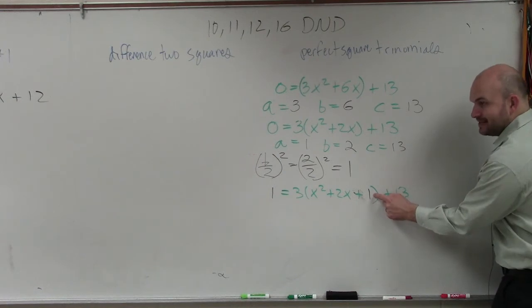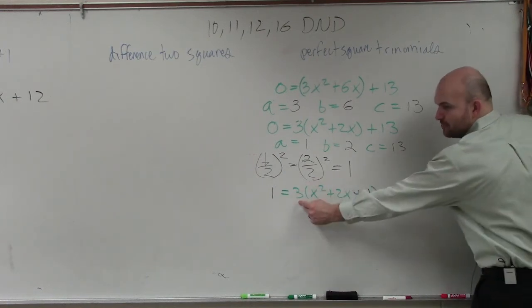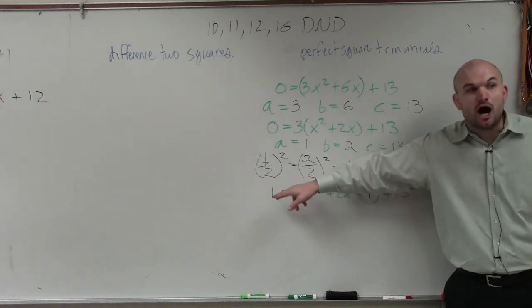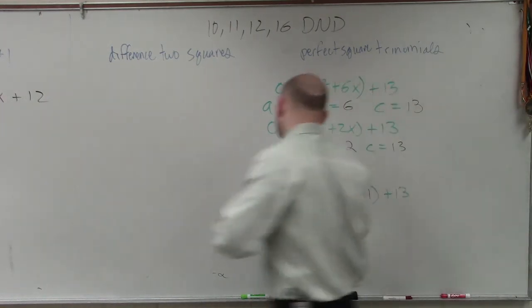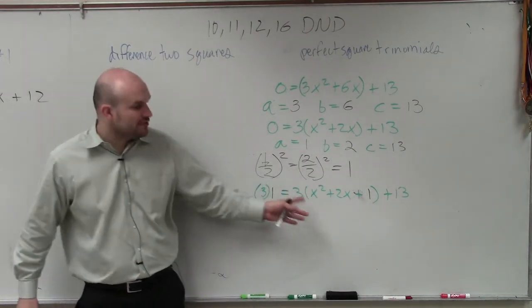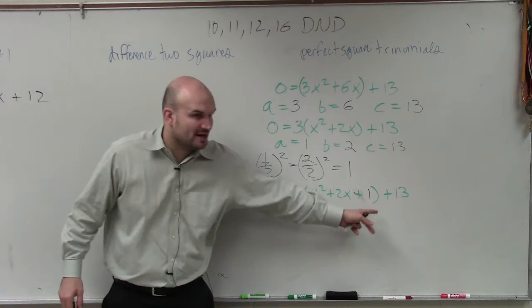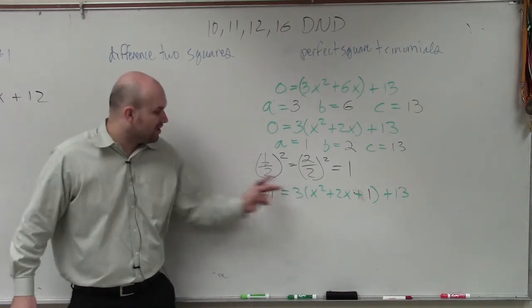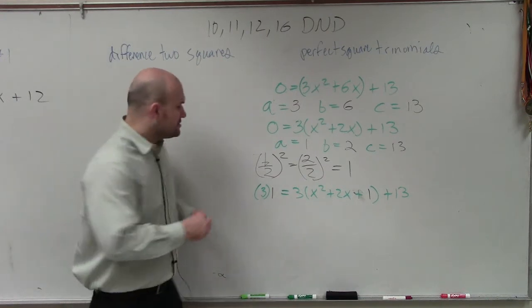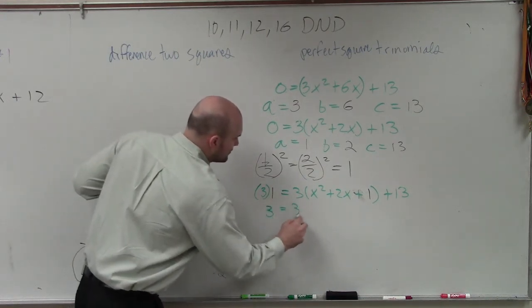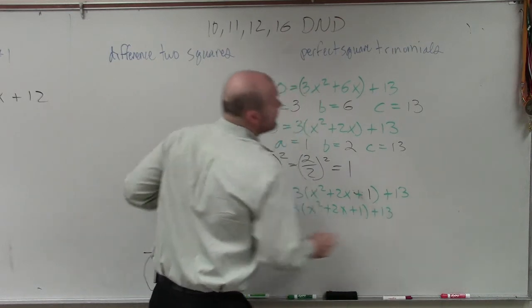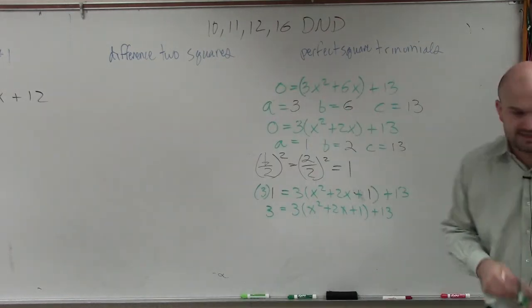So on the left side, I also have to add a 1 that is multiplied by a 3. So you have to say whatever you factored out, when you add the 1 in there, whatever you factored out, you have to multiply that same number on the left side. So now I have 3 equals 3 times x squared plus 2x plus 1 plus 13. I will finish up here, guys, in just a second. Please stay with me.